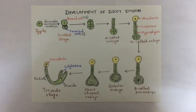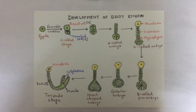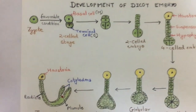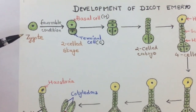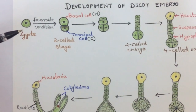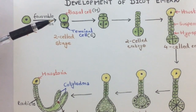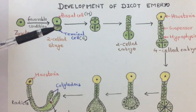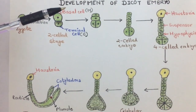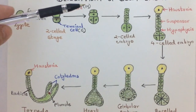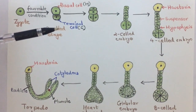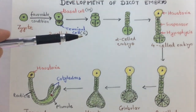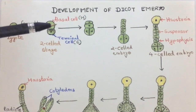Let us see it step by step for easy understanding. First we can see the zygote, which under favorable conditions divides into a two-cell stage. The upper cell is the basal cell, which lies towards the micropylar end, and next is the terminal cell, which lies towards the chalazal end.